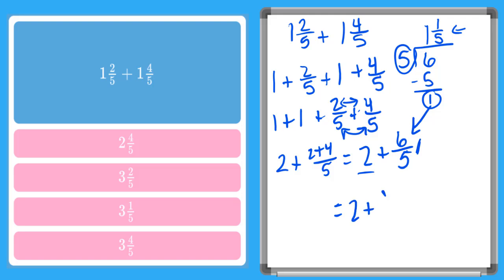So I can now replace this 6/5 here with my improper fraction. So I have 2 plus 1 plus 1/5. I now can add here my whole number is 3 and 1/5. There's my answer there.